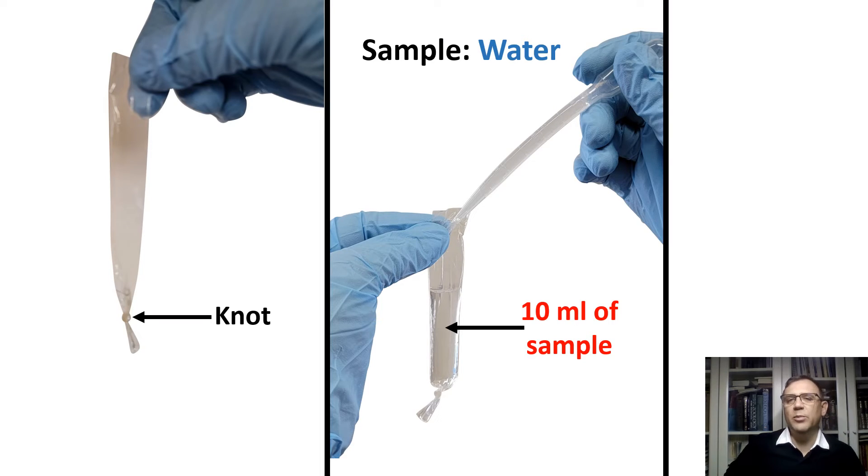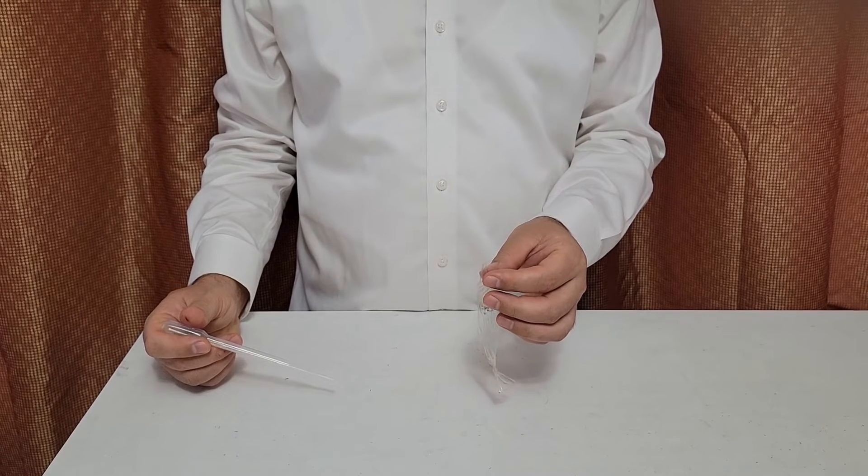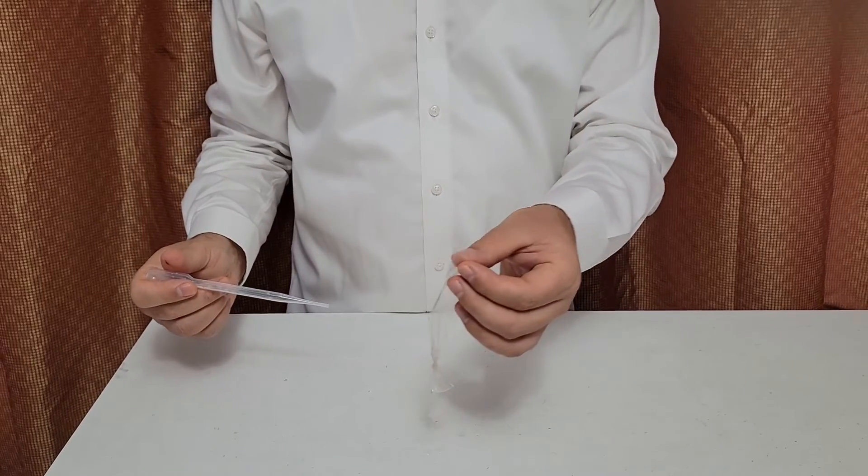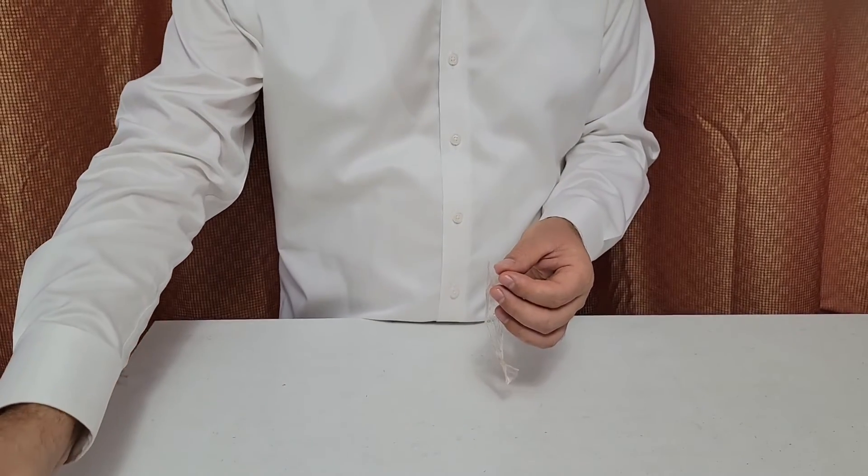Once the bag is open, you can add your first sample using a plastic 3 ml dropper or by pouring in 10 ml at once from a graduated cylinder. In our case, the sample is tap water. After adding the sample, we will secure the end with a string. And here's how I do this.